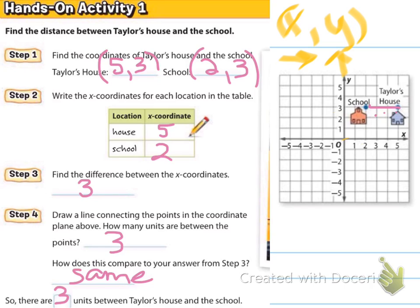In this case our x's were different, so we subtracted them to find the distance. If our y's had been different — if it had been a situation where one point was here and another was here — I would figure out the y-value at each point and subtract those to find the distance. It just depends on what axis the segment is going across.